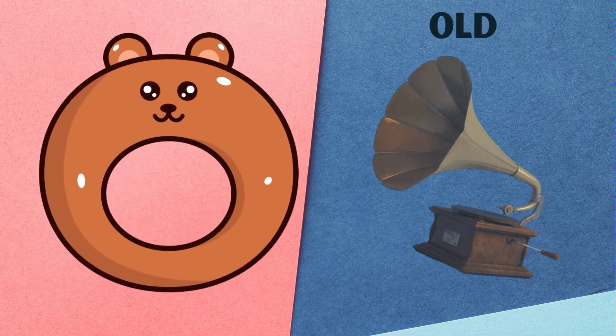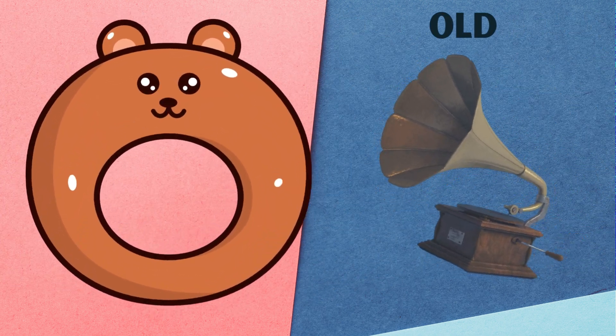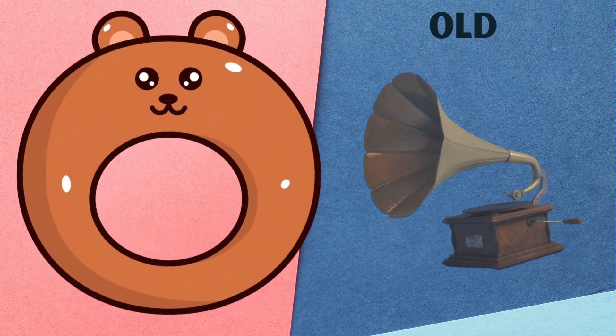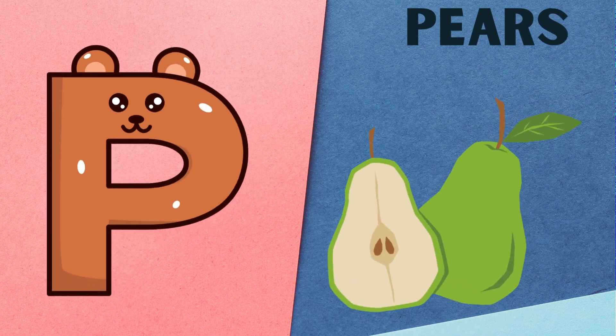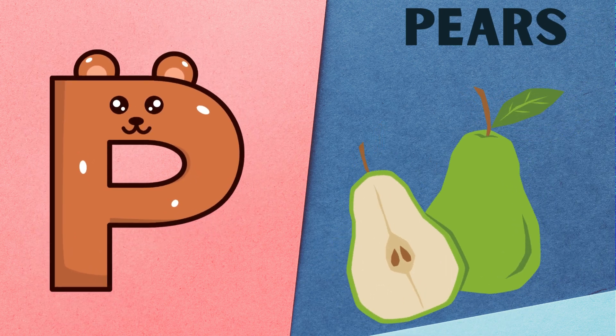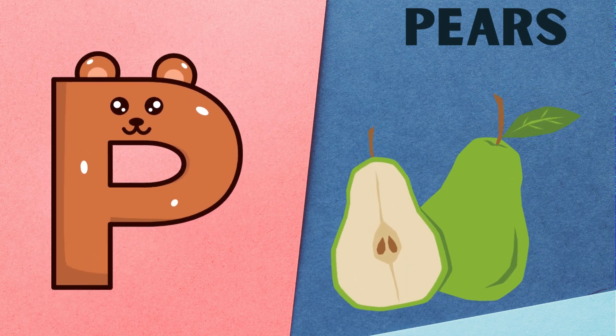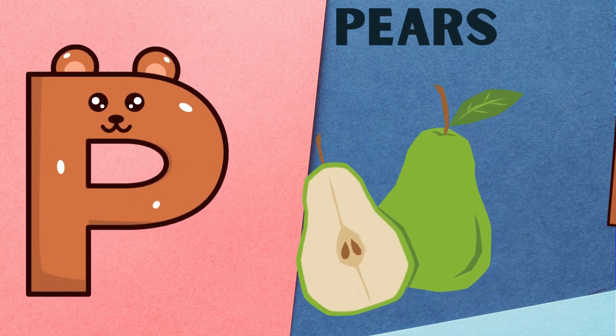O is for old, o, o, old. P is for pair, p, p, pair.